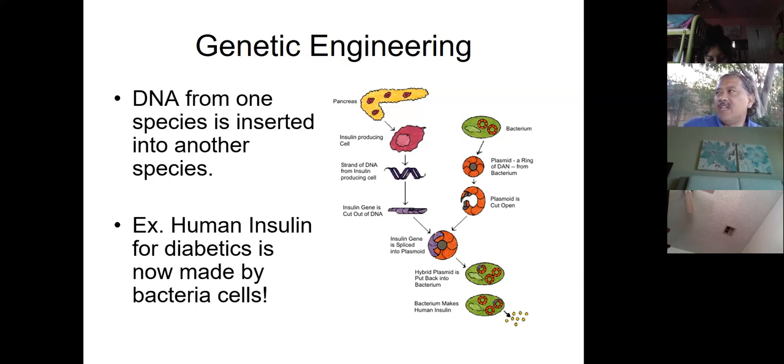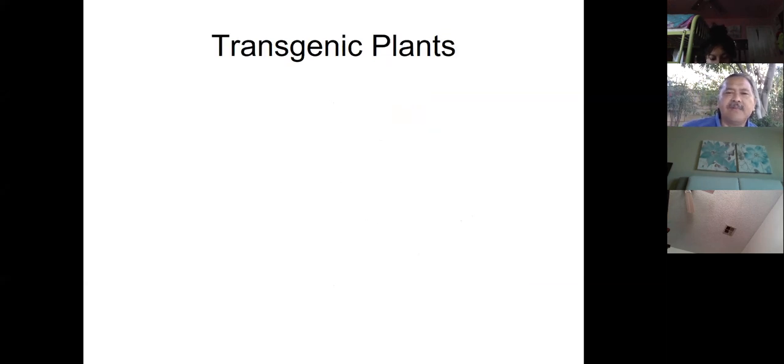So then this bacterium is going to start making the insulin, even though it's not, you know, even though it's human insulin, it has a direction for it. So it's going to make it. Okay, so that's what we do with genetic engineering. We've been able to do this since the early 1970s.